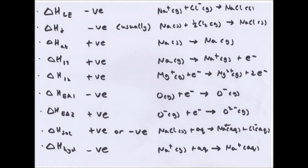The first electron affinity is exothermic because the electron is attracted into the outer shell — it's almost like a bond is being made, so energy is given off. But the second electron affinity is endothermic because once you add an electron, the whole atom has a negative charge. An electron also has a negative charge, and like charges repel, so you need to put in energy to force them together.